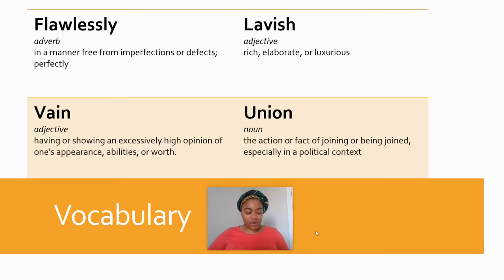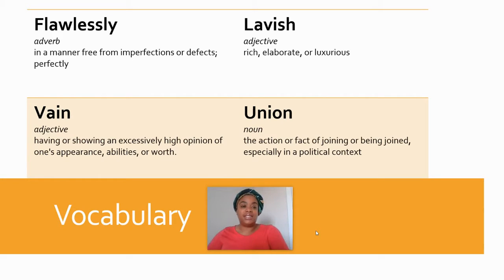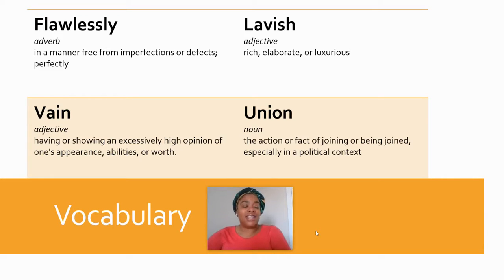Scholars, we have a total of four vocabulary terms for today. The first word is flawlessly. Flawlessly is an adverb. It means in a manner free of imperfections or defects — perfectly. Flawlessly.